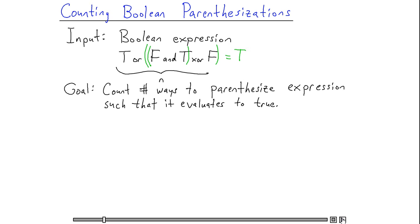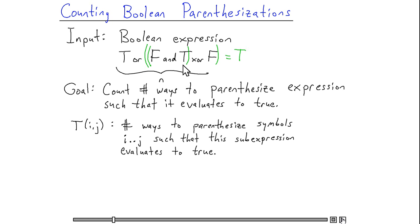Our dynamic programming subproblems are going to be the following. Let's let T(i,j) denote the number of ways I can parenthesize a subexpression from just symbol i up to symbol j. By symbol here, I mean the trues and falses, not the operators between them. So i and j are going to range from 1 up to n.